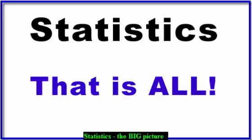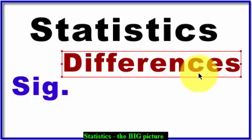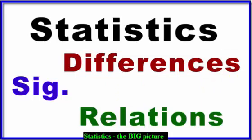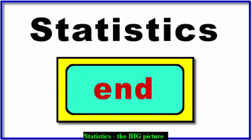And that's it. Those are the only two things: you're looking for significant differences between group means, or significant relations between variables. That word 'significant' means that somebody did a lot of math on it. Differences or relations — that's 99% of what we're going to do in statistics. MGZ out.